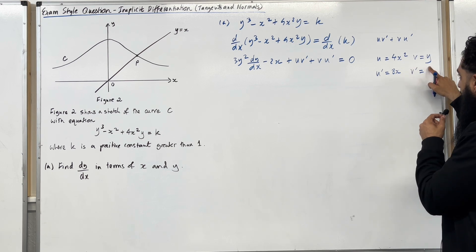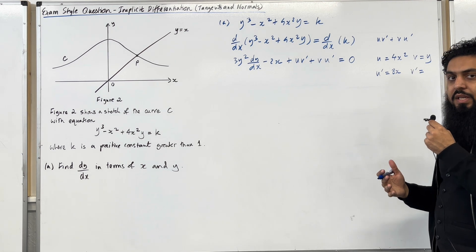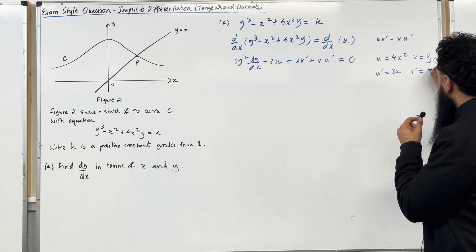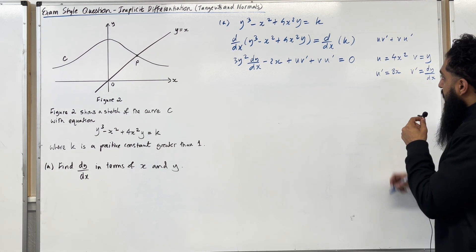V dash differentiate y. You get 1 multiplied by dy over dx, which is just dy over dx.